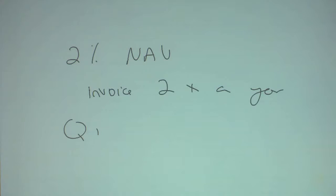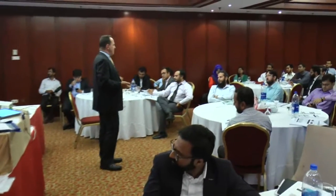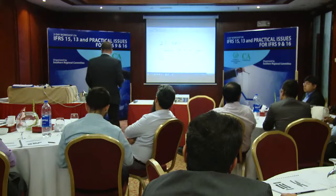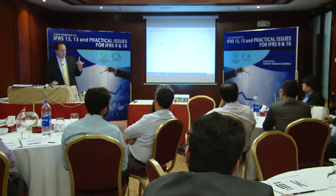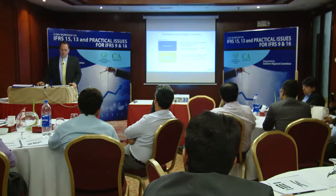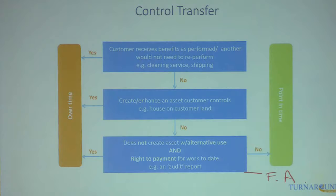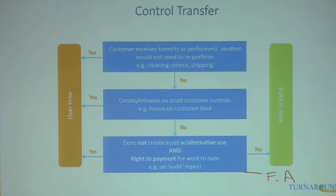The fee is a percent per year, billed twice a year, based on net assets. The question is: at the end of Q1, can you book any revenue? The invoice can only be issued in June, so there is no right to payment yet. But can the work be redone? If I managed your money in Q1 and did a bad job — I made bad investments — can I redo it? No. So therefore, I recognize the revenue.